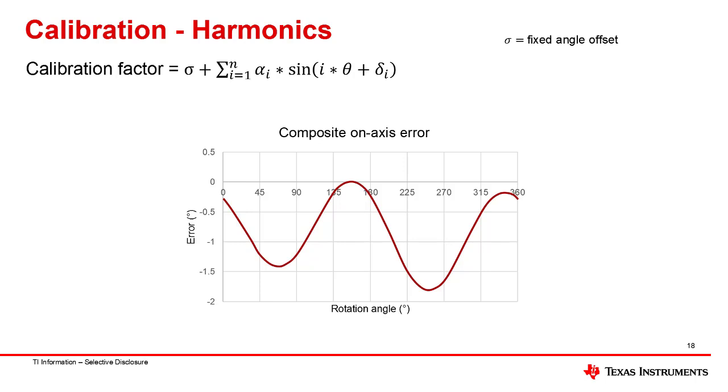Sigma represents a fixed angle offset. Alpha represents a scalar correction factor for each particular harmonic. I is the harmonic number starting at the fundamental. N is the total number of harmonics to correct. And delta is a phase correction factor for that harmonic.